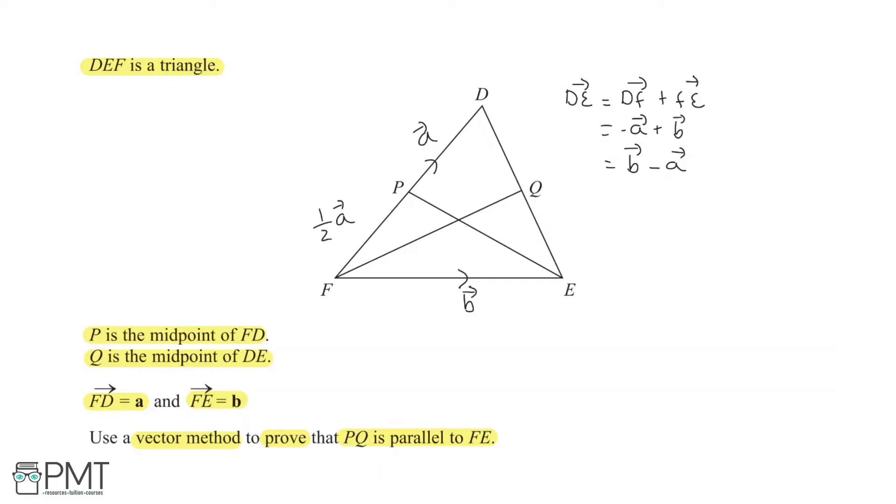Then from here, we will find DQ. And we know that Q is the midpoint of DE, so we know that the vector DQ equals half the vector DE, which equals half B minus A. So we know that this here is half B minus A.